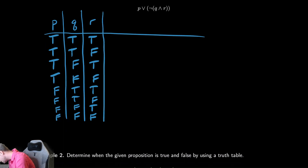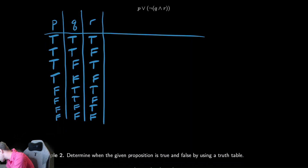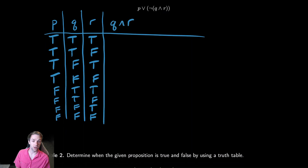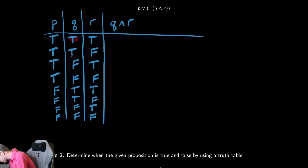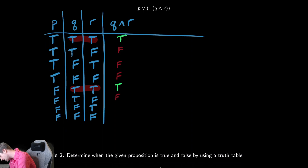Now let's figure out how to evaluate the expression. You think about it from the inside out — you start with the innermost operation. Looking at the parentheses, the innermost operation is Q and R. So I'm going to create a column for Q and R and fill it out, looking for where they are both true. In the first row they're both true, then no, no, no, and then they're both true again in one more row. So in those two rows Q and R is true, and every other place it is false.